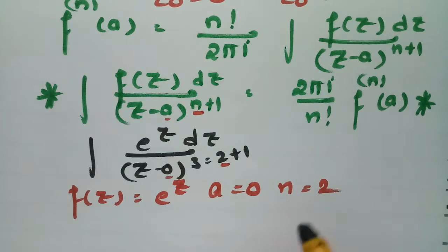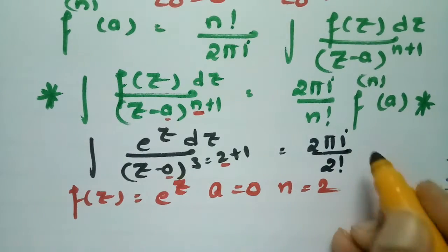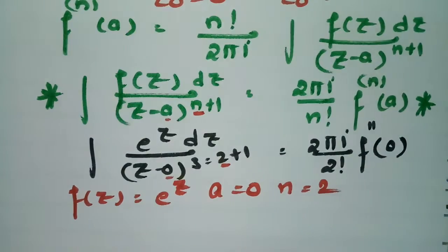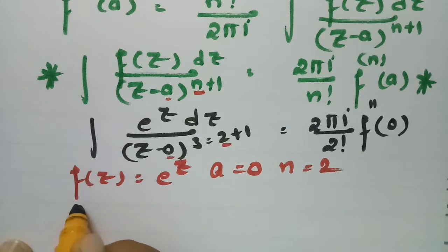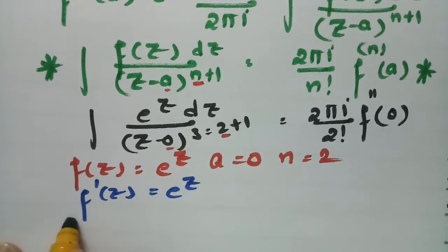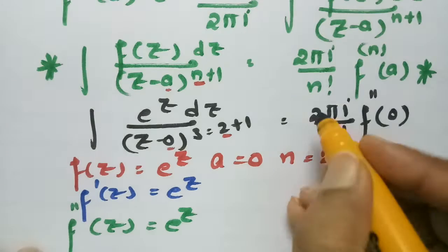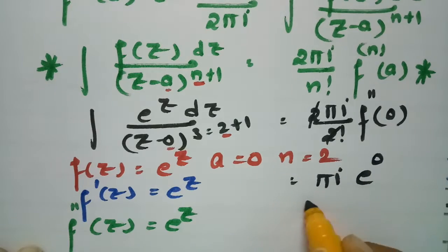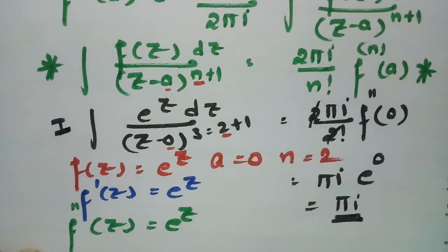Substituting into the formula gives (2πi / 2!) · f''(0). The first derivative of e^z is e^z, and the second derivative is also e^z. So f''(0) = e^0 = 1. Cancelling 2 from 2πi / 2!, the first integral value is πi.